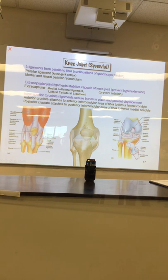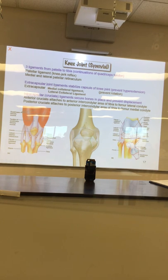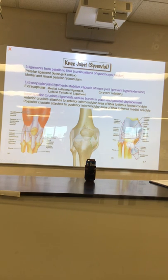You can see the ACL connecting right in the middle of the knee, right at the center core. It's called an intercapsular ligament because it's inside the capsule of the knee itself — physically inside the knee.